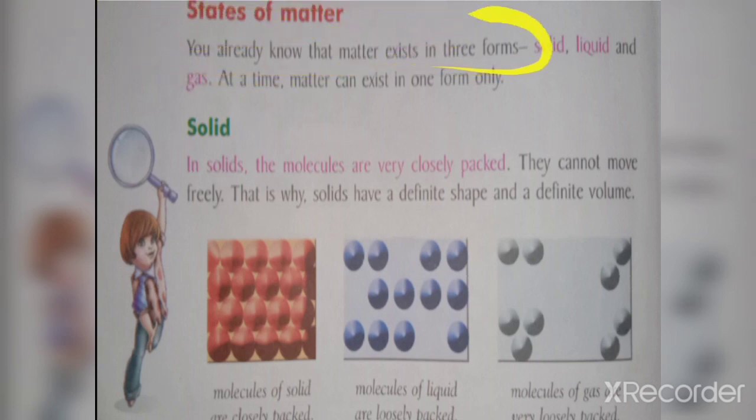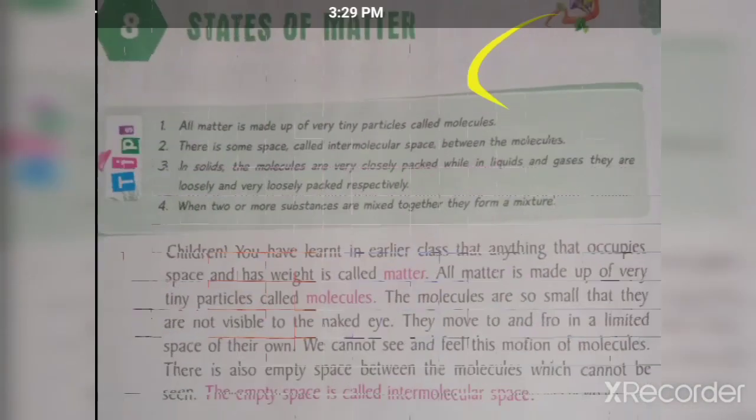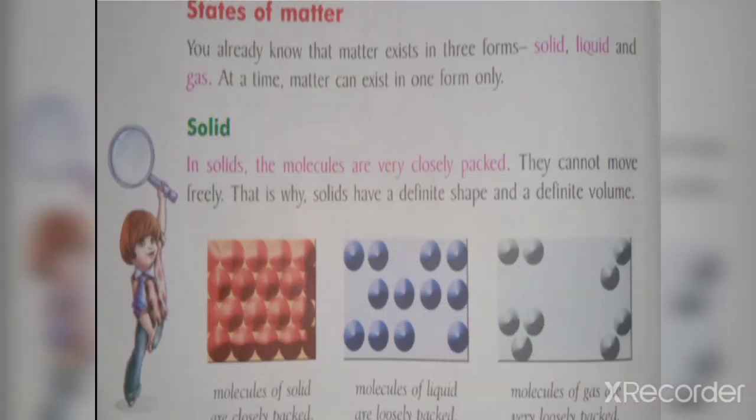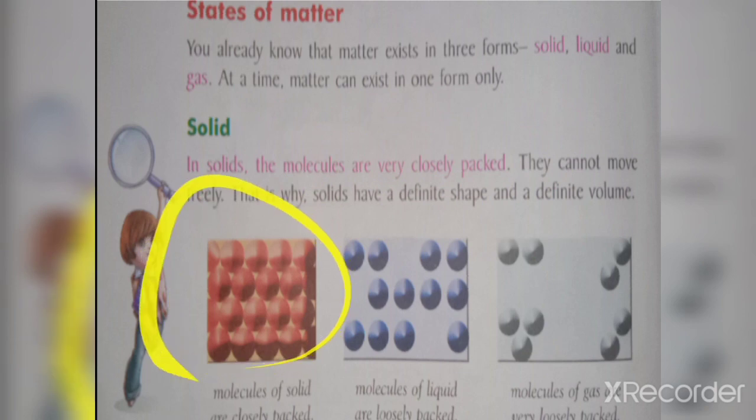Then fruit, it is also solid. Books, solid. Hot air balloon, hot air balloon has gas filled in it. Pen, pen is also solid. Now we will learn about solids. Books, pencil, chair, table, utensils, all these things are examples of solid.